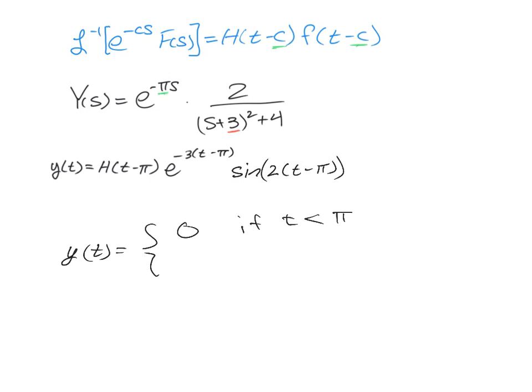And then remember, Heaviside takes on a value of one. So it's going to be e to the negative three times (t minus π). And then the sine of 2t minus 2π. And that's for t's greater than or equal to π.